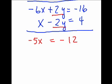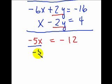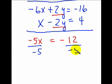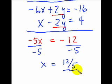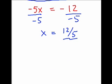Fairly simply, if we just divide both sides of the equation by negative 5, that will give us a positive x variable — a 1 in front of the x. And thus we have solved for x. So it looks like x is 12 fifths. Major progress — we have one of the variables found.